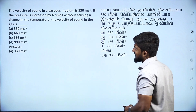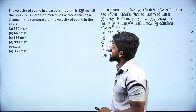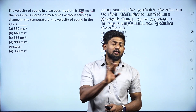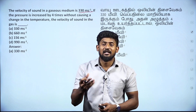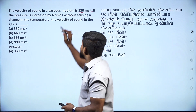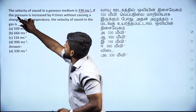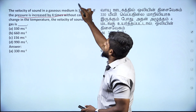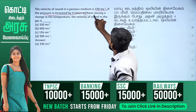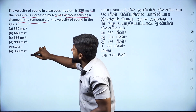The velocity of sound in a gaseous medium is 330 meters per second. If the pressure is increased by 4 times — the sound velocity is the same. Pressure does not affect the velocity of sound. Without causing any change in temperature, it will remain 330 meters per second.